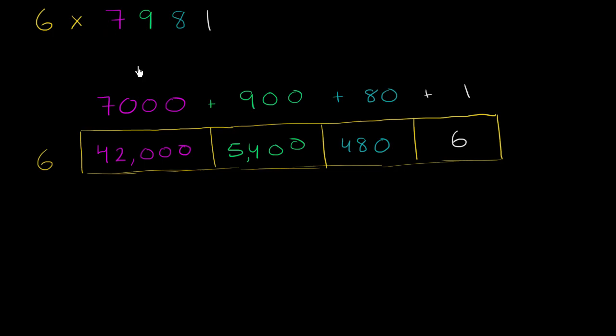So to find what this product is, we just have to take the sum of each of these numbers. What 6 times 7,000 is, plus 6 times 900, plus 6 times 80, plus 6 times 1. So let's do that right over here. So it's going to be 42,000 plus 5,400, plus 480, plus 6.